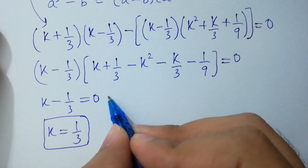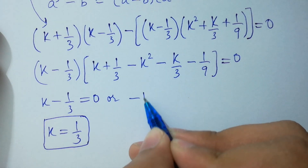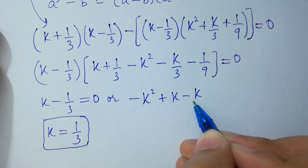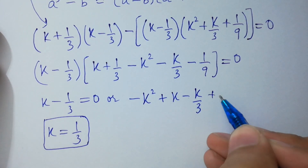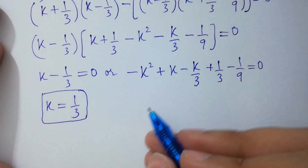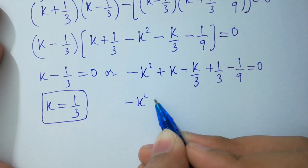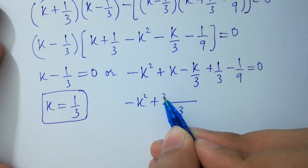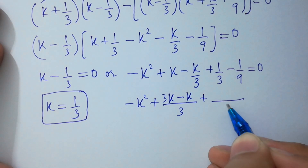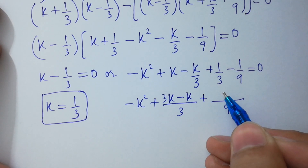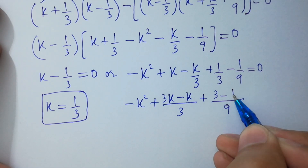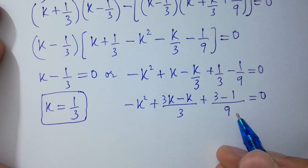And or: minus k squared plus k minus k over 3 plus 1 over 3 minus 1 over 9 equals 0. Minus k squared plus, taking LCM 9: 3k minus k equals 2k, over 3, plus 3 times 3 is 9, minus 9 times 1 is 9, and 1 times 1 is 1, over 9, equals 0. I hope you understood.